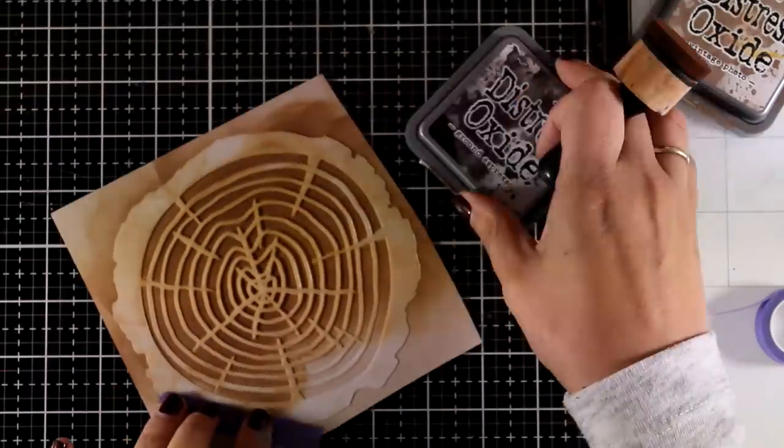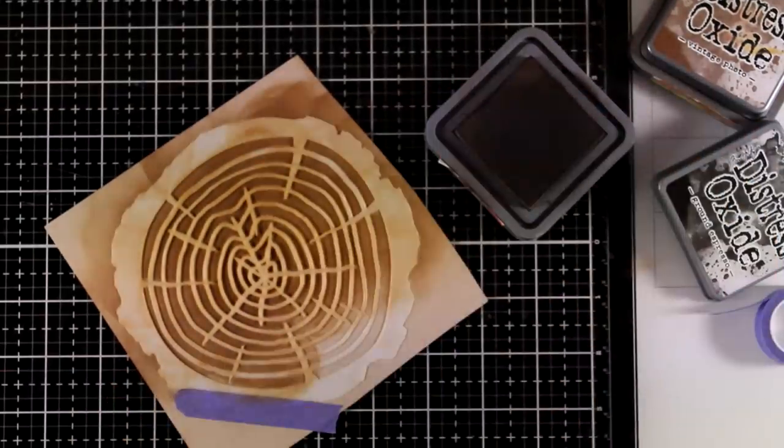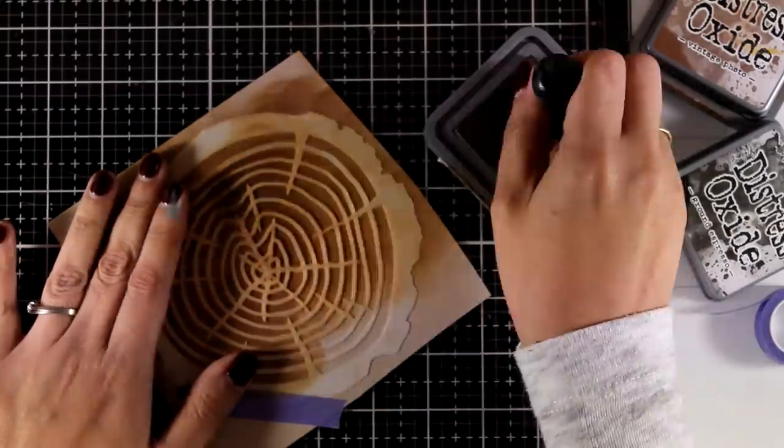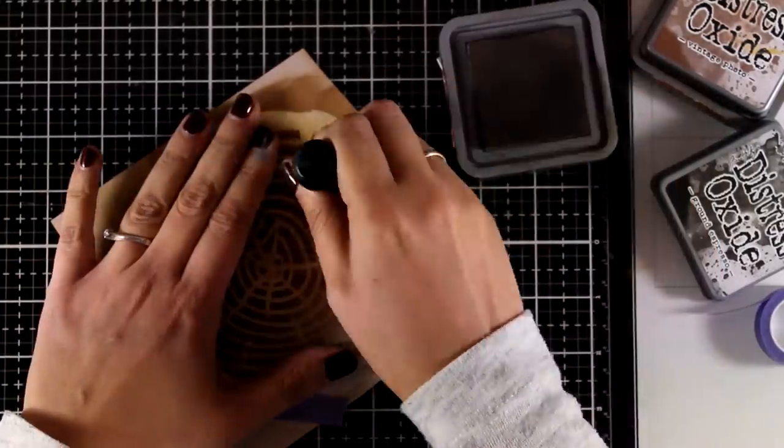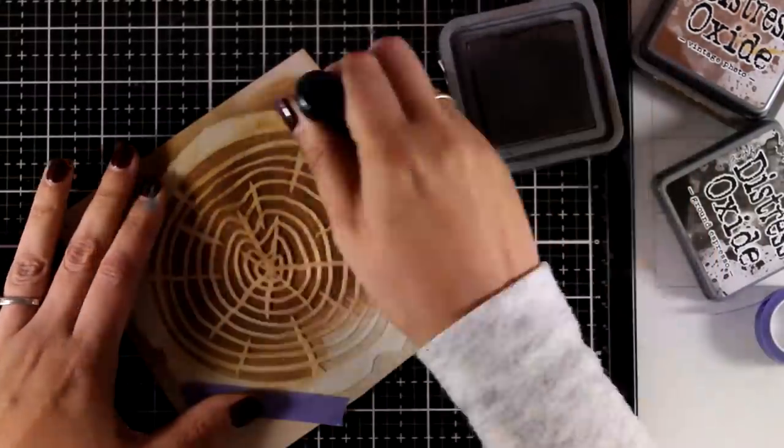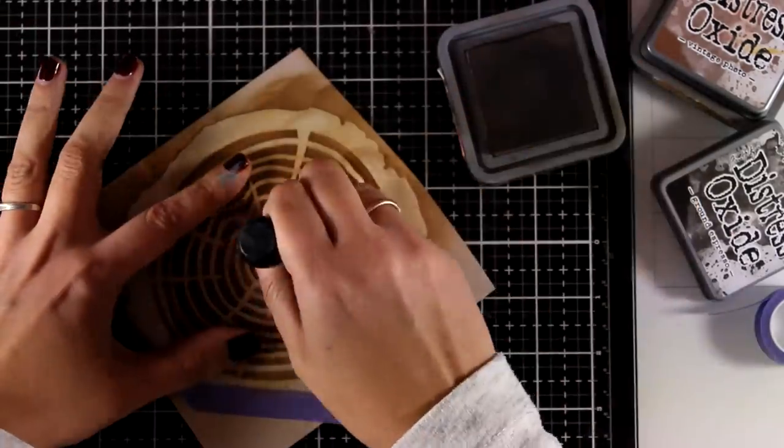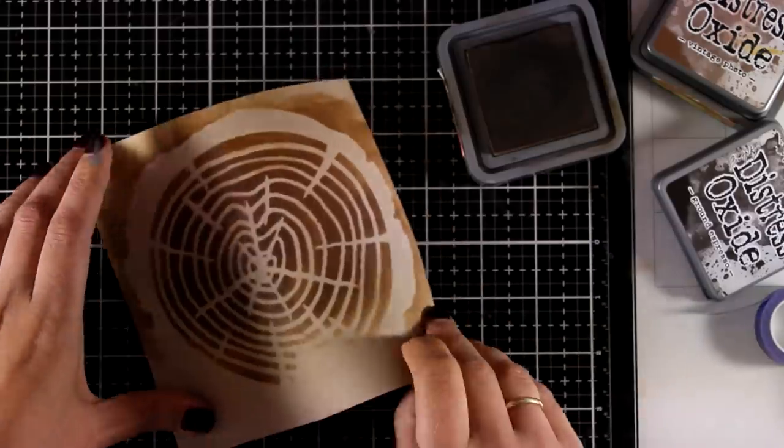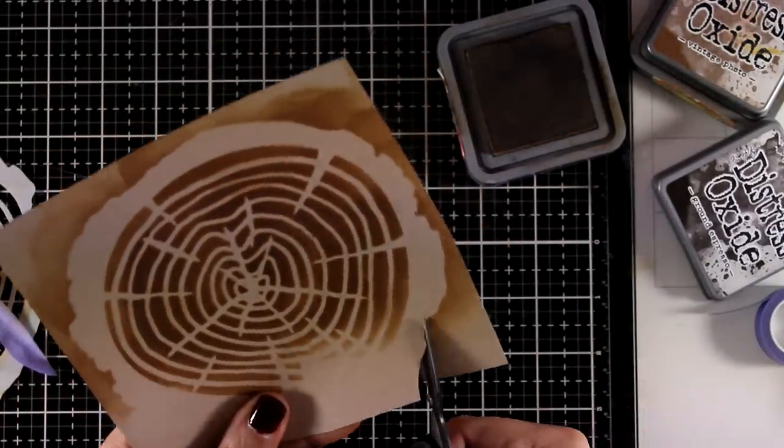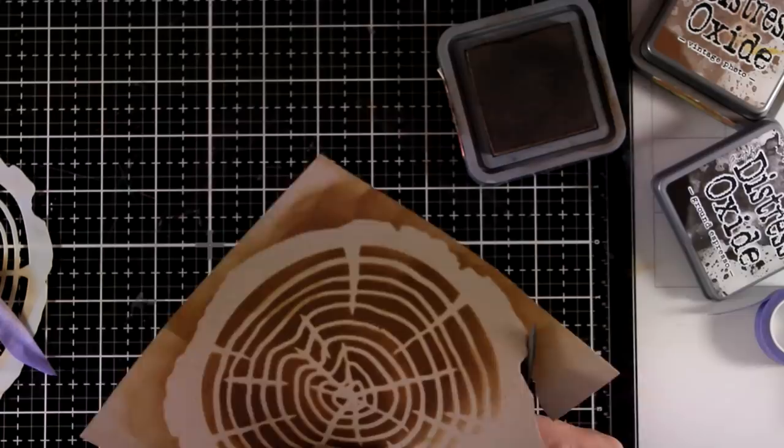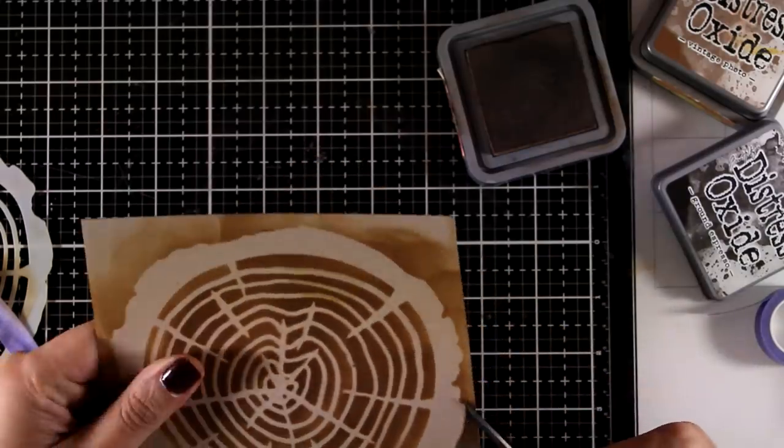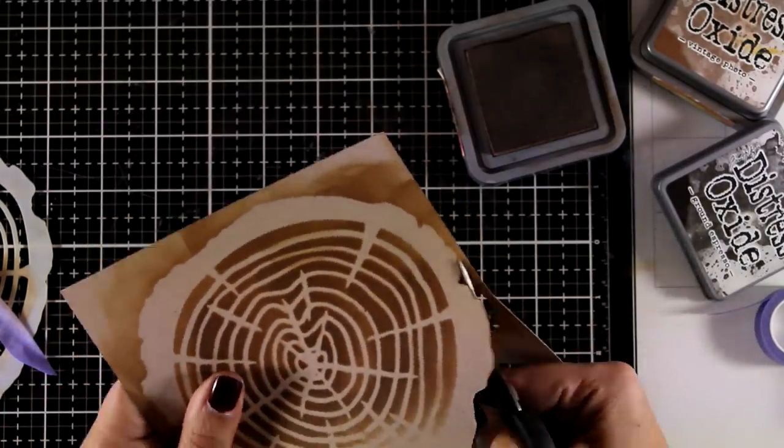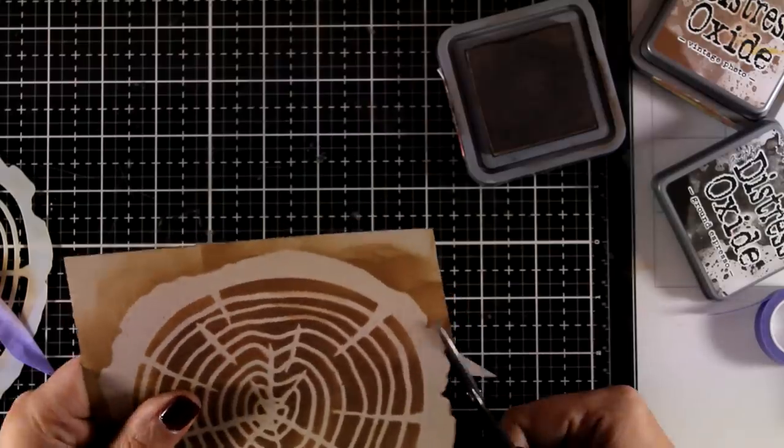So I am going to place it back there and now this time I am going to go with a slightly darker brown ink. That is ground espresso. I am not applying it all over the place. I am just applying it here and there to have some depth and variation and I will not end up with a super flat impression.